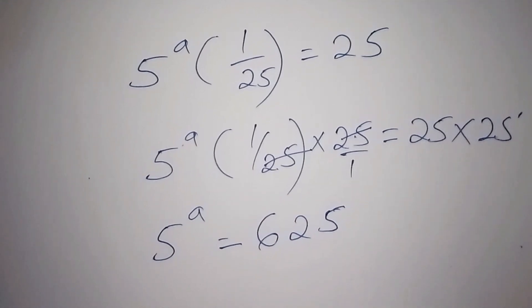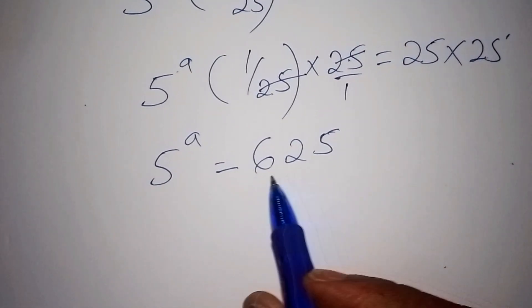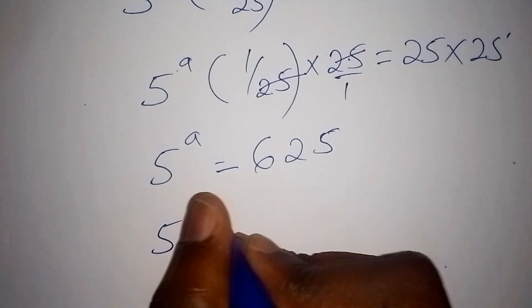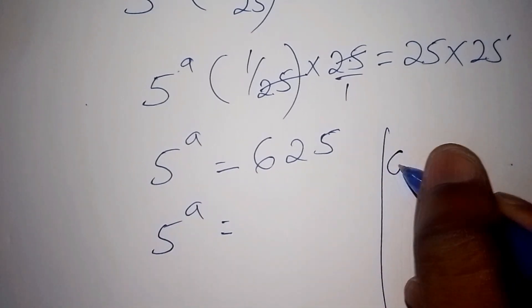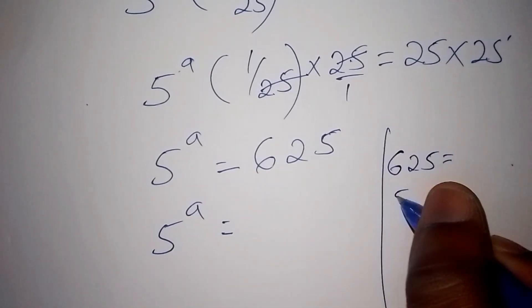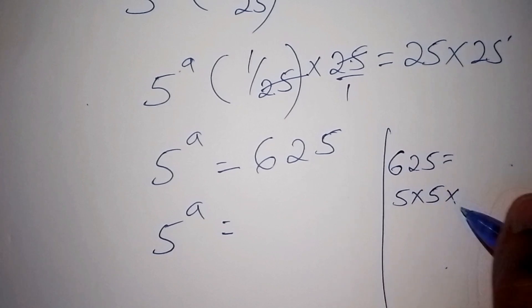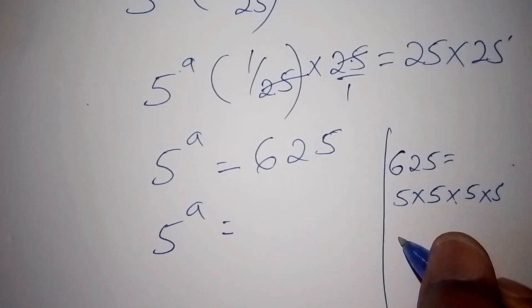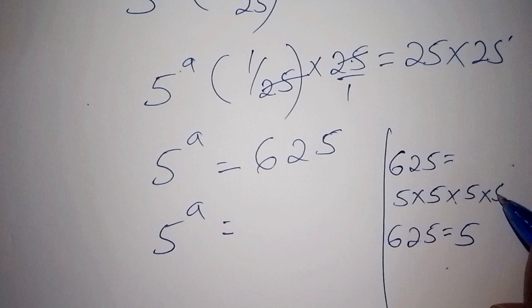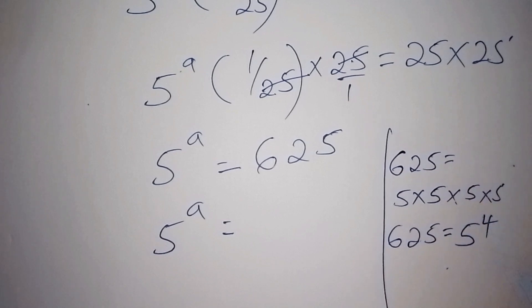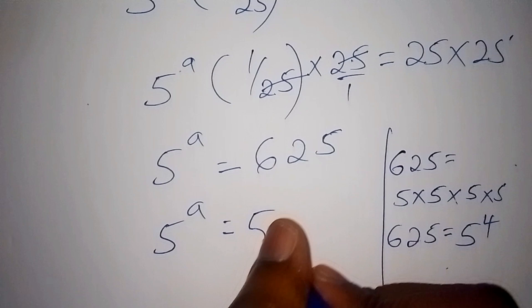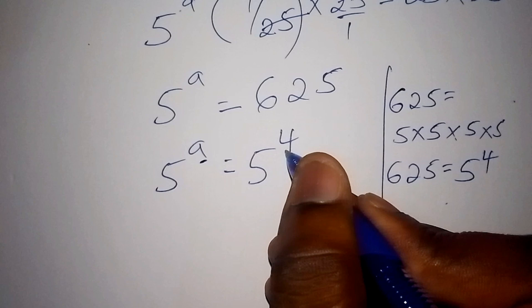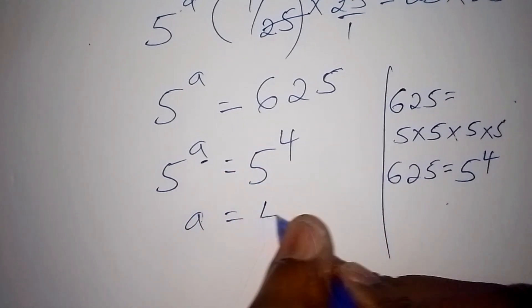Now we shall change 625 into a base and an index. So 5 to the power of a equals 625. Since 625 equals 5 times 5 is 25, times 5 is 125, times 5 is 625 — that is 5 to the power of 4. So 5^a equals 5^4, and picking the index numbers, our value for a equals 4.